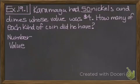The number refers to the number of coins and the value is what each coin is worth. The first equation is the number of coins. We have 50 nickels and dimes, so we can say nickels plus dimes is 50.